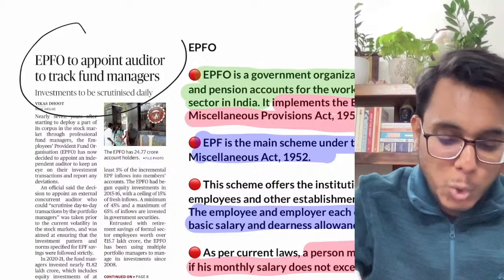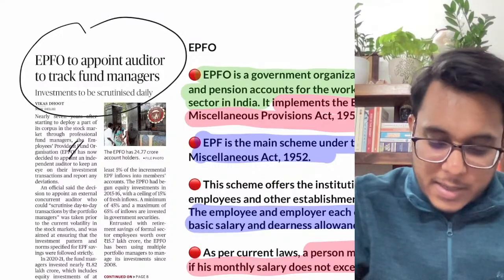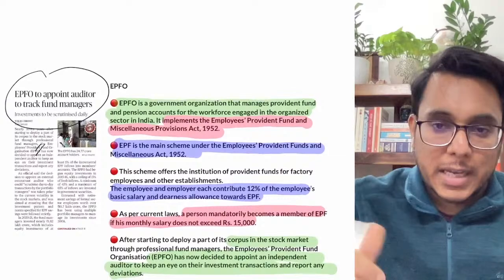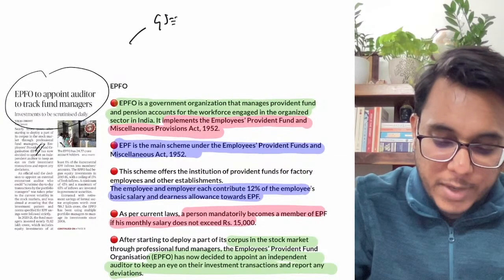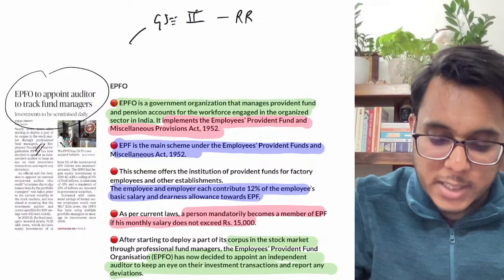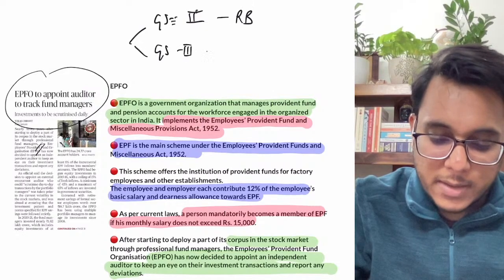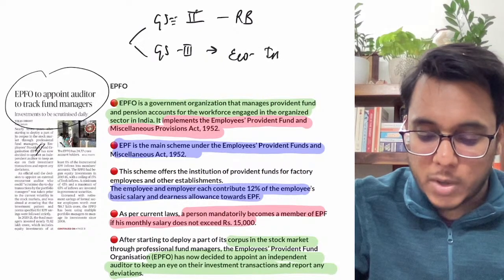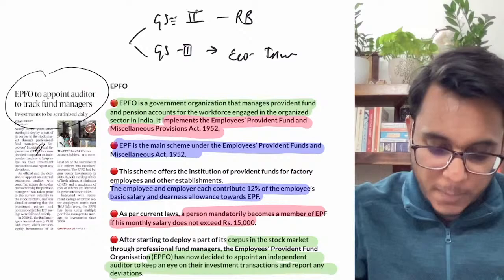The next article: EPFO to appoint an auditor to track fund managers. This will be important for GS Paper 2 (Regulatory Bodies) and GS Paper 3 (Economic Issues). Let's first understand what the EPFO and the provident fund are about. Consider a person working in a factory — during productive working years, they earn a salary. But in old age, when they can no longer work actively, they need money to meet basic needs. This is the problem that the provident fund concept is designed to solve.